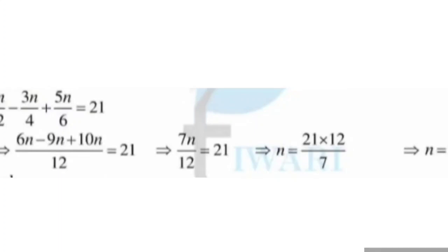For n upon 2, we multiply n by 6; for 3n upon 4, we multiply by 3; and for 5n upon 6, we multiply by 2. All over 12 equals 21. This gives 6n minus 9n plus 10n upon 12 = 21. So 6n minus 9n is minus 3n, and minus 3n plus 10n is 7n. Therefore 7n upon 12 is equal to 21.